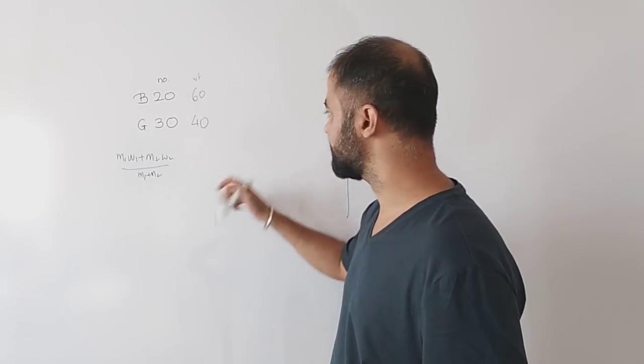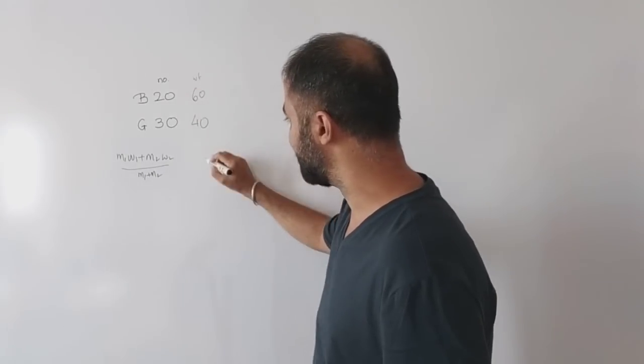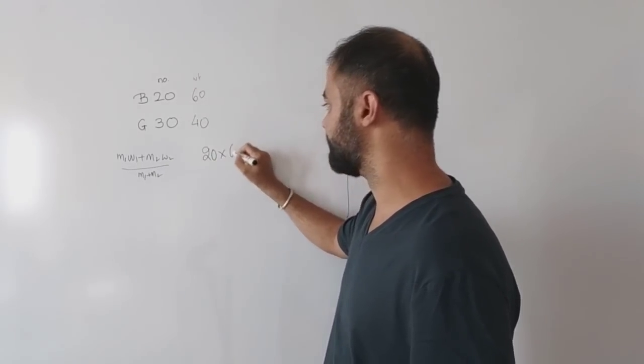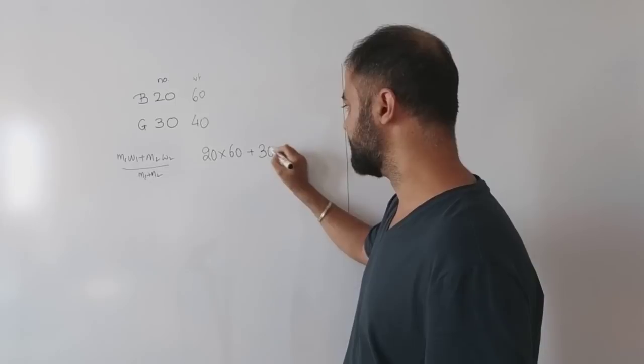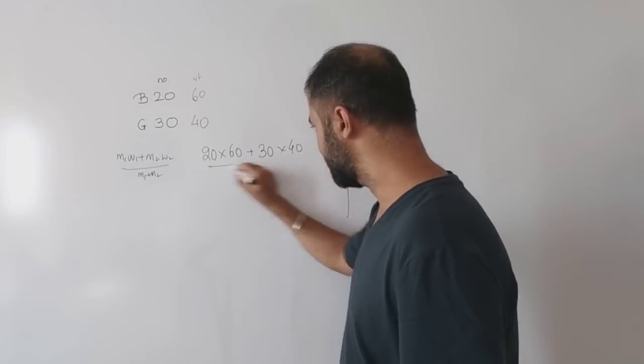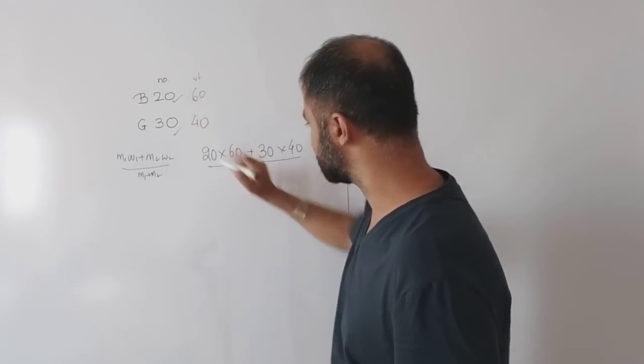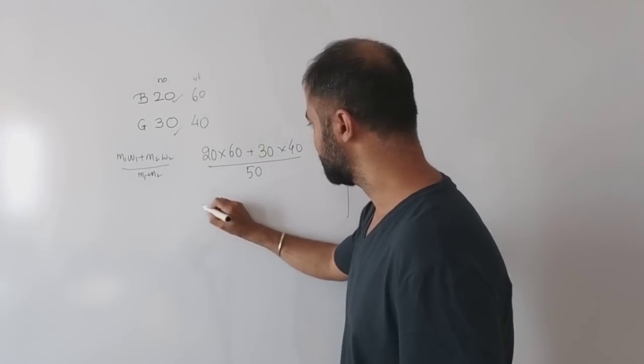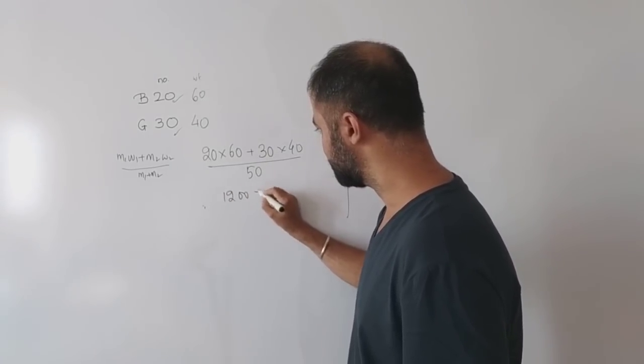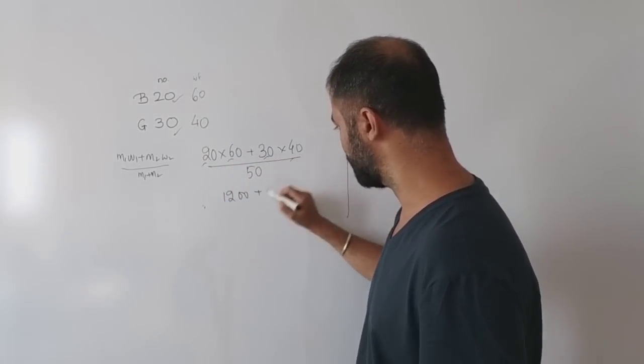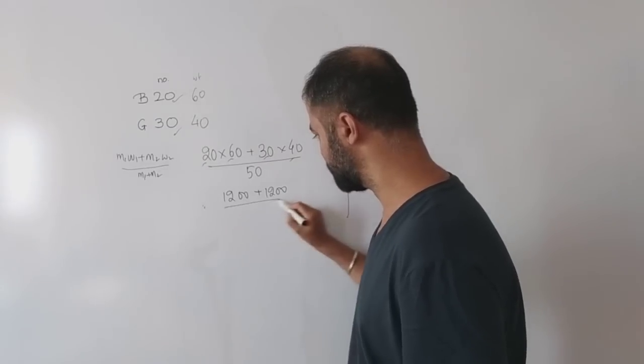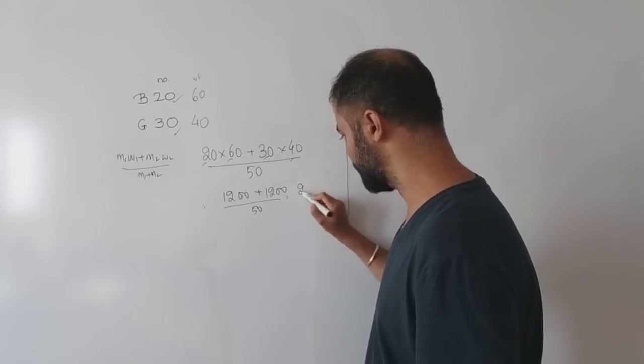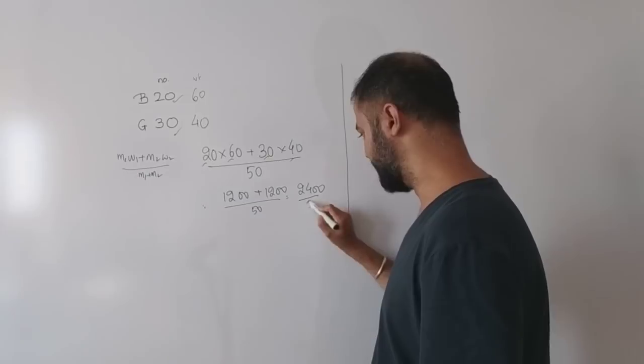So 20 boys times their weight 60, plus 30 girls times their weight 40, divided by total students 50. This gives us 1200 plus 1200 equals 2400 divided by 50, which is 48. The average is 48.